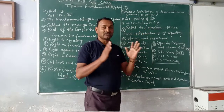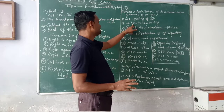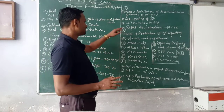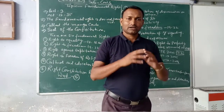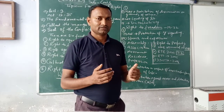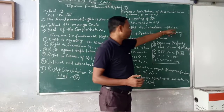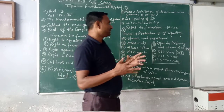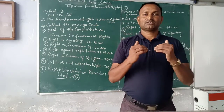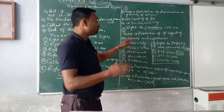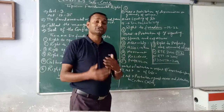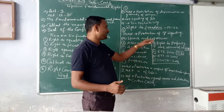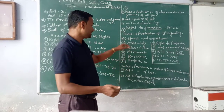Untouchability is a main and important part of our constitution's Right to Equality. The Right to Equality mainly gives rights to citizens. The second right is the Right to Freedom — Swatantrata Ka Adhikar. This is a very important part of our Constitution, which has seven sub-rights. The Indian Constitution gives seven types of freedoms.